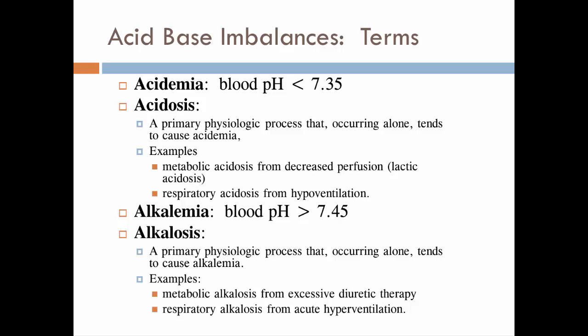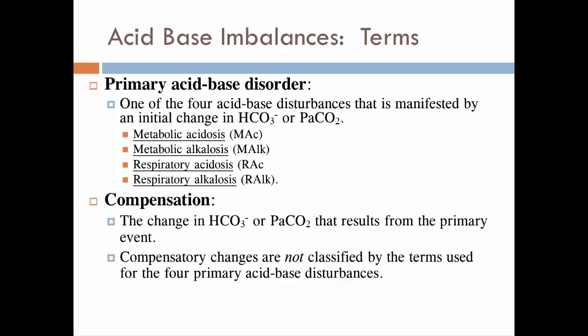Hyperventilation is clinically defined as breathing such that we decrease partial pressures of CO2 in our blood. So the primary acid-base disorders, then, is one of four disturbances that are tied in with bicarbonate or partial pressures of carbon dioxide. So we have metabolic acidosis or metabolic alkalosis, respiratory acidosis or respiratory alkalosis.